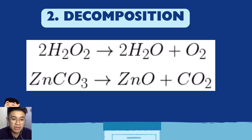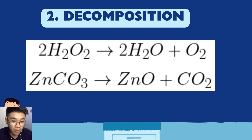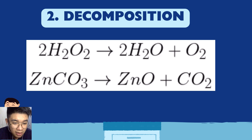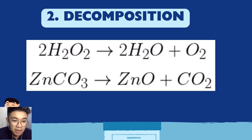Second example of decomposition: ZnCO3 (zinc carbonate), a single compound, yields ZnO (zinc oxide) plus CO2 (carbon dioxide). Notice you decompose zinc carbonate into its simpler units. In a decomposition reaction, one single compound breaks down into simpler compounds or elements — opposite of combination reaction.